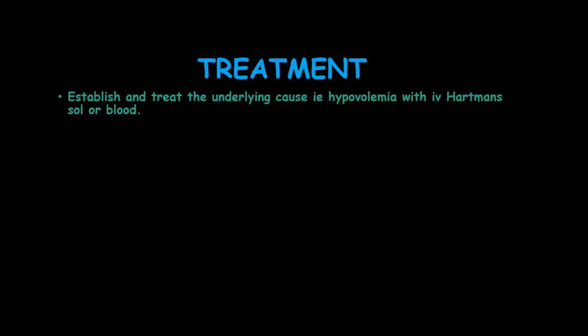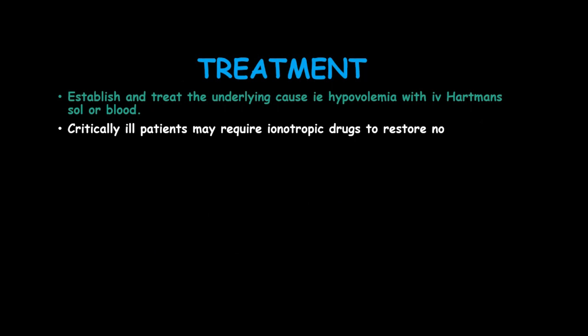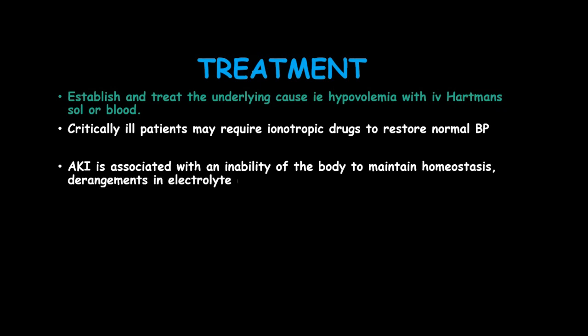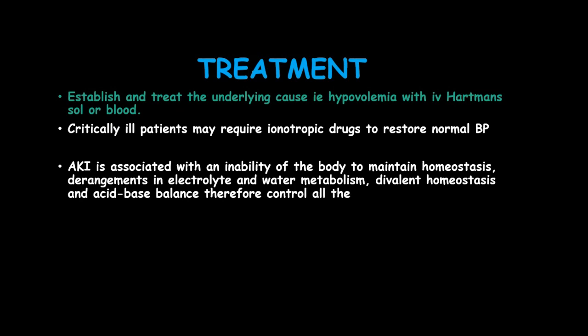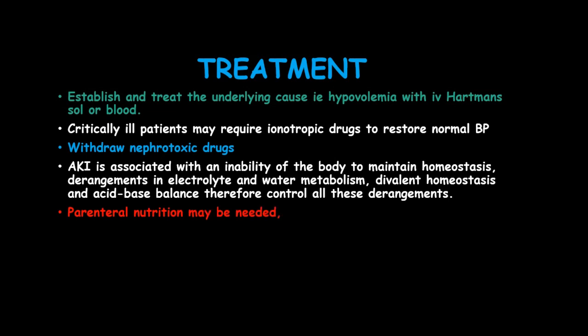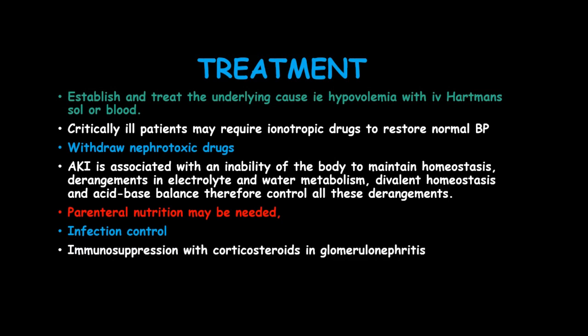Treatment of AKI involves establishing and treating the underlying cause. For hypovolemia, manage the patient with intravenous fluids such as Hartmann's solution or blood. Critically ill patients may require inotropic drugs to restore normal blood pressure. Control of derangements in electrolyte and water metabolism, fluid homeostasis, and acid-base balance is important. Withdraw nephrotoxic drugs. Parenteral nutrition may be needed. Infection control using antibiotics, and immunosuppression such as corticosteroids in glomerulonephritis. Hemodialysis or peritoneal dialysis may be required.